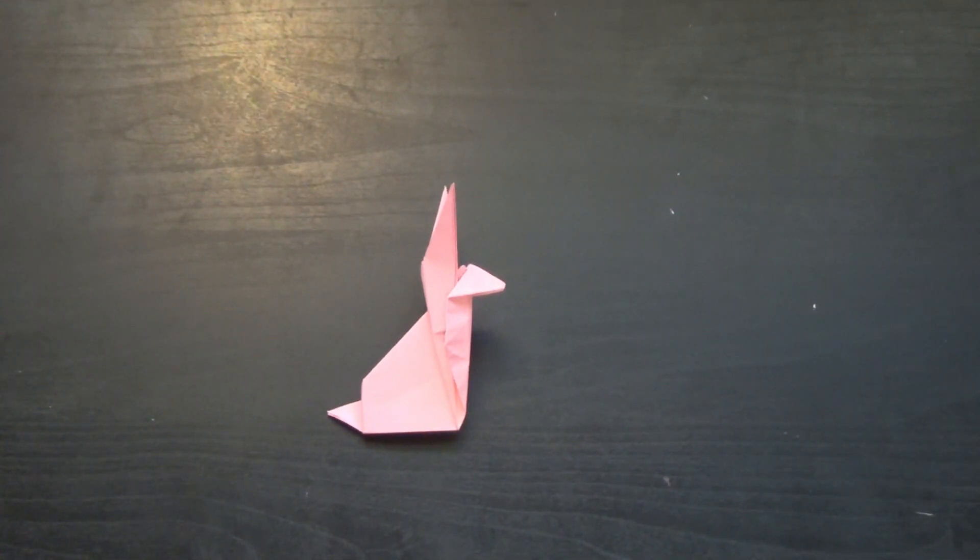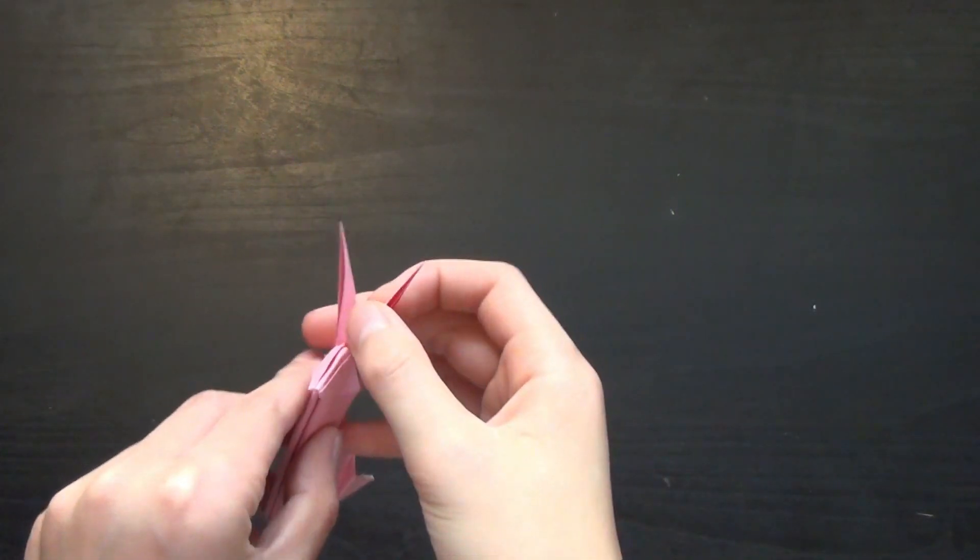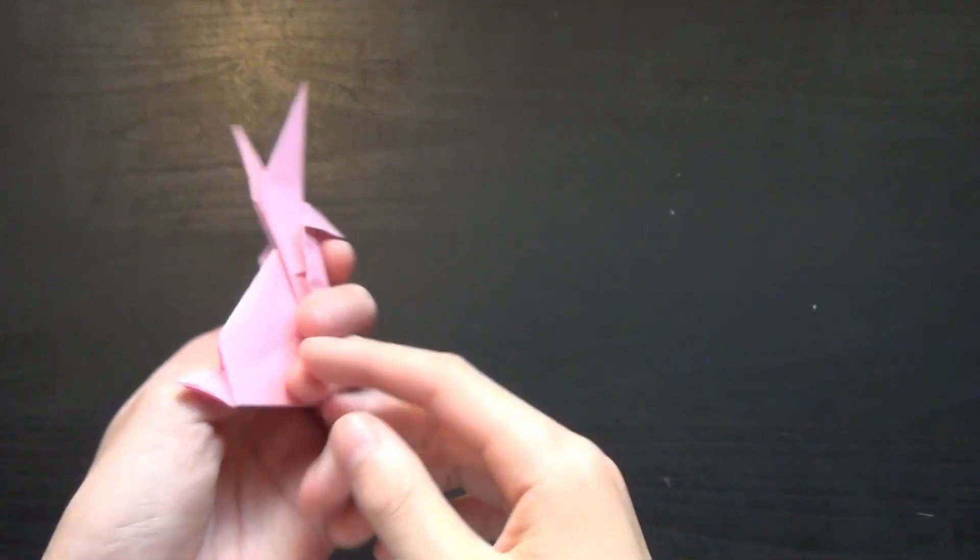Hi guys! Today I'll be doing a video on how to make the Origami Easter Bunny. The bunny looks like this. It has two ears up here, a nose, and a fluffy tail.